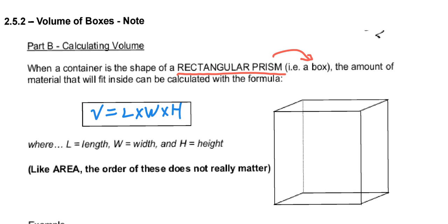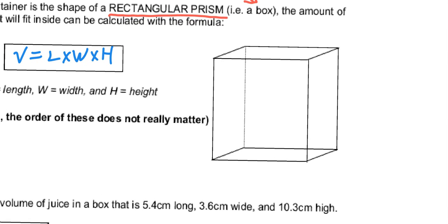Now, here's the best part of this. Remember when we did area, it didn't matter which way we calculated it — you could have length times width times height, or width times length times height, or whatever. It didn't matter. When we look at the work today, I usually assume the following: this is our length, this is our width, and this is the height. Going into the paper is our width, going up and down is our height, and going left and right is the length. Let's take a look at a sample problem.